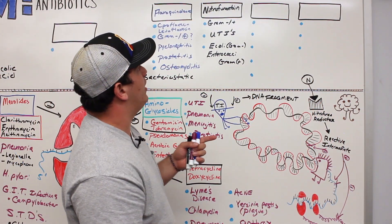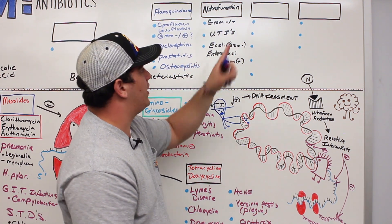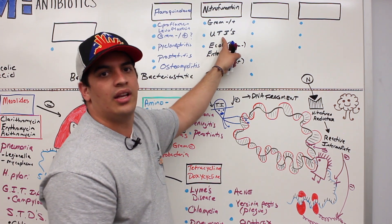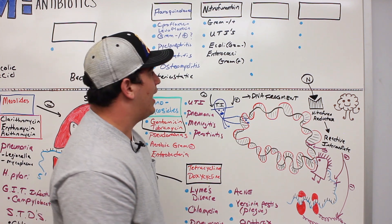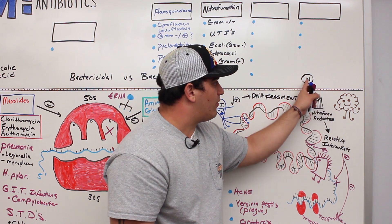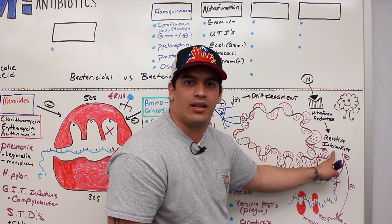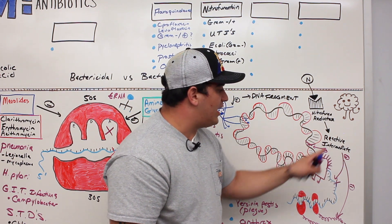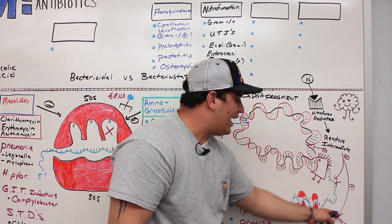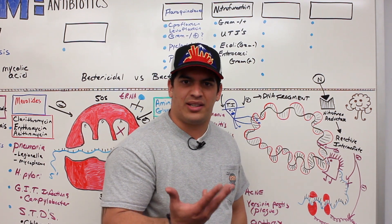Quick recap on nitrofurantoin: it treats gram-negative and gram-positive bacteria, specifically E. coli which is gram-negative and enterococci which is gram-positive, usually causing urinary tract infections. It works by binding onto nitrofurantoin reductase, which converts it into a very reactive intermediate — similar to reactive oxygen species — causing damage to DNA, RNA, proteins, and the cell wall. Eventually this causes the cell to die, so it's a bactericidal effect.